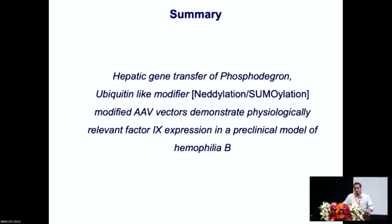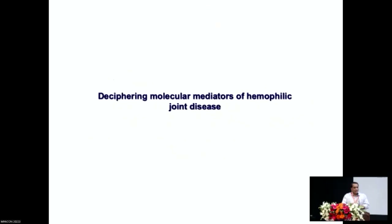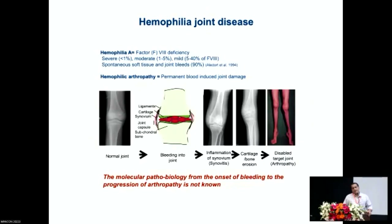I'm going to switch gears and talk about something that you — particularly the hematopathologists — identify with: hemophilic arthropathy. This audience doesn't require an introduction to hemophilic arthropathy. We know that there is only supportive care. What was not known are the molecular mediators that result in progression from synovitis to arthropathy — which is the loss of articular cartilage. Human samples are not available to test, so we use mouse models to understand this phenomenon.